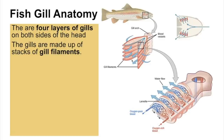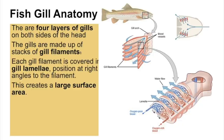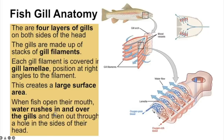Looking at fish gill anatomy: there are four layers of gills on both sides of the head. The gills are made up of stacks of gill filaments, each covered in gill lamellae positioned at right angles to the filament. Because there are so many gill lamellae and filaments, this creates the large surface area — the first adaptation.